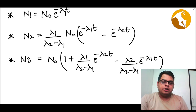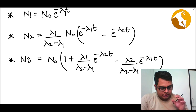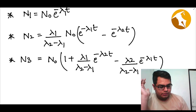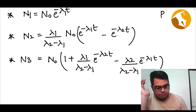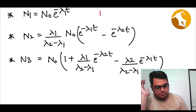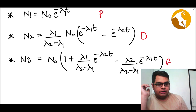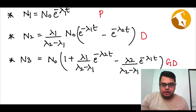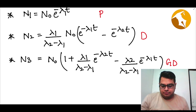These are the three very important formulas you require. After time t: N1 is your parent nuclei concentration, N2 is your daughter nuclei concentration, and N3 is your granddaughter nuclei concentration.